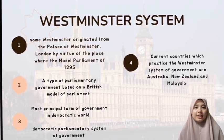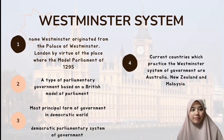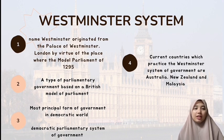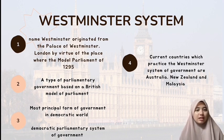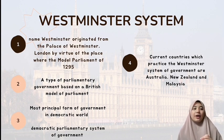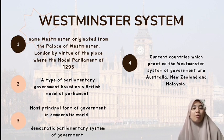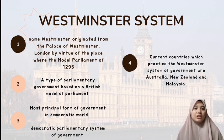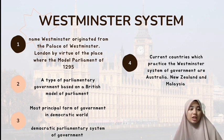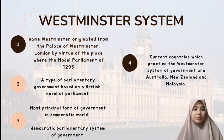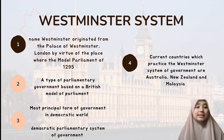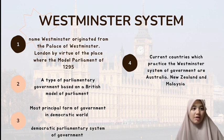We will now ask briefly regarding what is actually meant by the Westminster system of government. The name Westminster originated from the Palace of Westminster, London, by virtue of the place where the modern parliament of 1295 was held, as well as where the first representative parliament was held. Till this present day, England's House of Parliament is still located at the Palace of Westminster. The Westminster system is a type of parliamentary government based on the British model of parliament, and is denoted as one of the most principal forms of government in the democratic world.